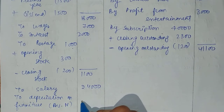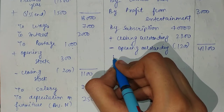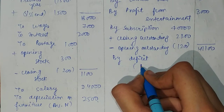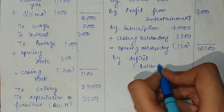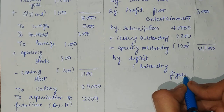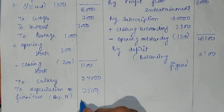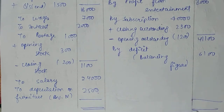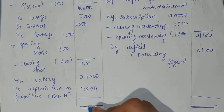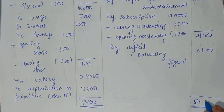This depreciation amount from the working note is $2,500. After this, students, solve the income and expenditure account. In this question, we have a deficit — not a surplus. The deficit is the balancing figure — $6,100. Now the total of the income and expenditure account comes to $54,600 on both sides.